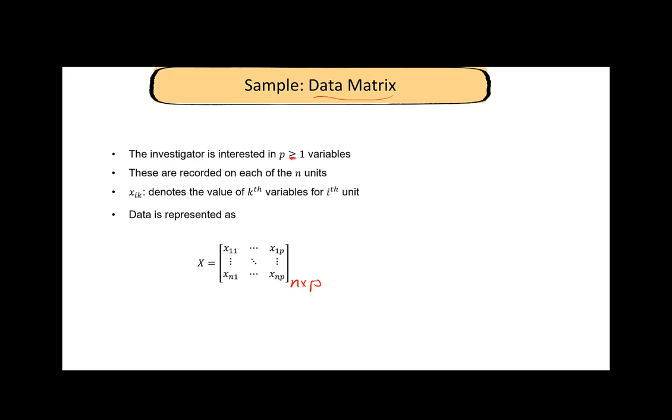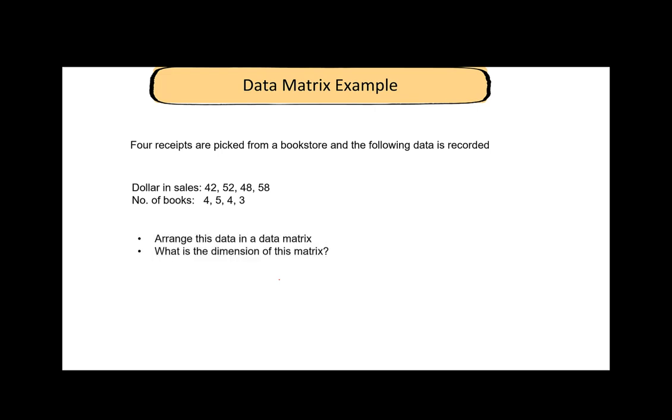It is important to keep track of how we are arranging this information. A quick example: four receipts are collected from a bookstore and the following data is recorded. We have two variables here, dollars in sales and number of books. Arrange this data in a matrix form and also write the dimension of this matrix. This is a quick example, an easy example, but make sure that you are clear on how we are arranging variables in this course.